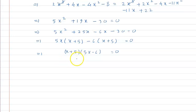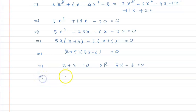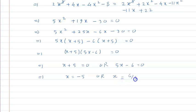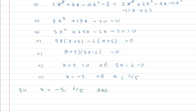Since the product of the two brackets is 0, either x plus 5 equals 0 or 5x minus 6 equals 0. This gives x is equal to minus 5, or x is equal to 6 by 5. So the final answers are x equals minus 5 and x equals 6 upon 5. I hope you understood the solution. Thank you.